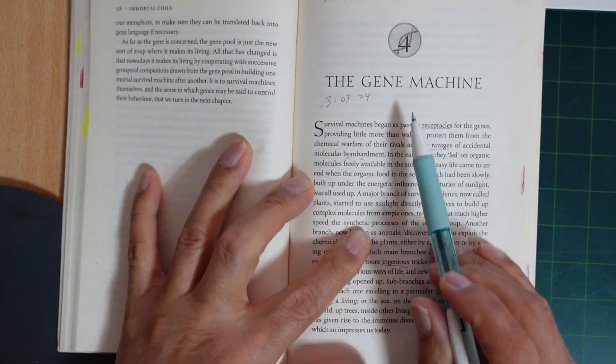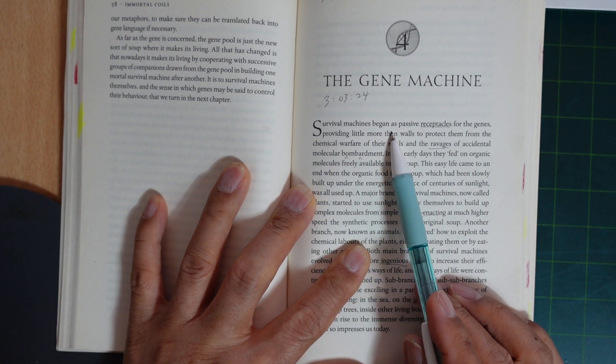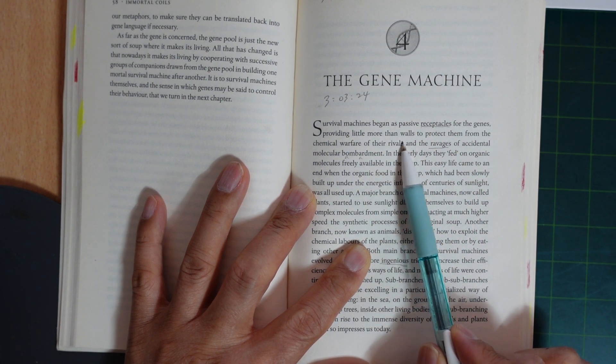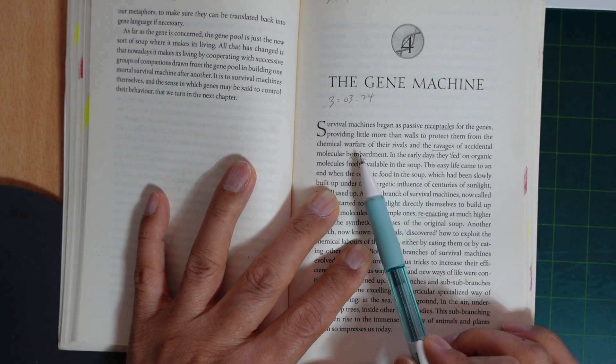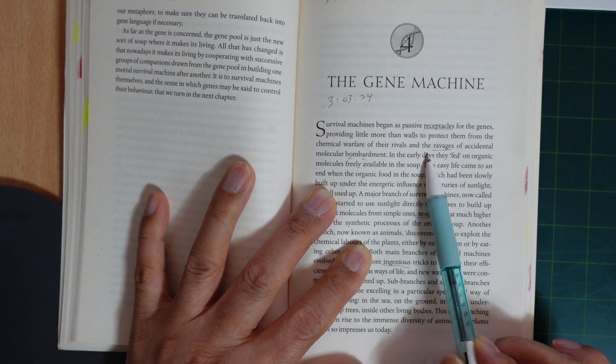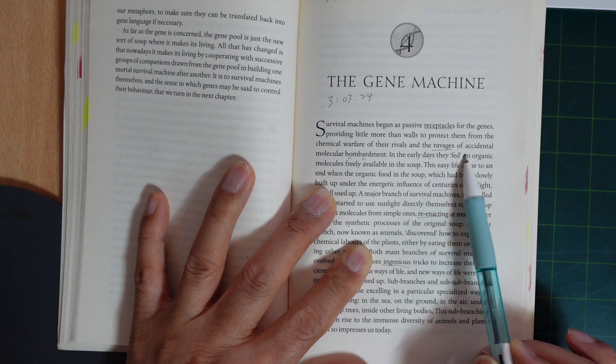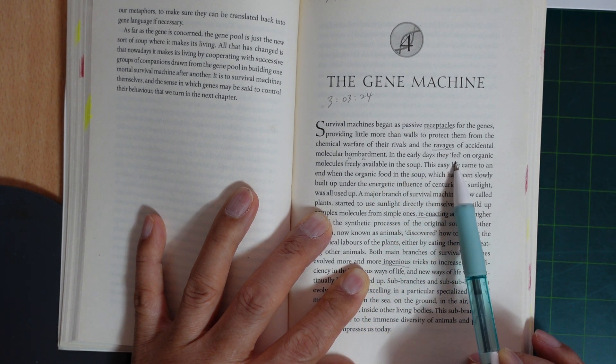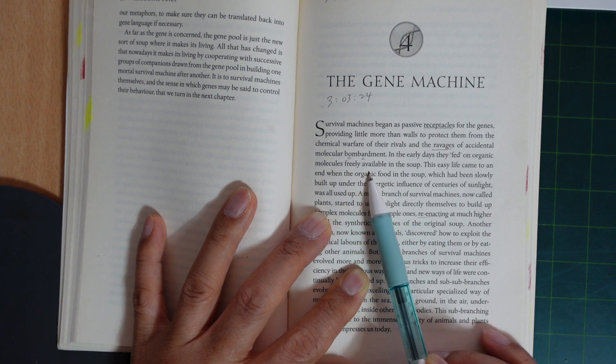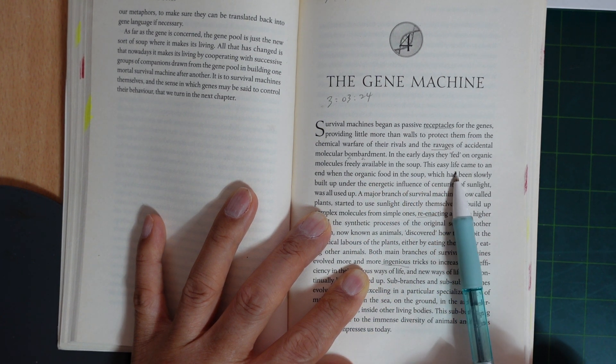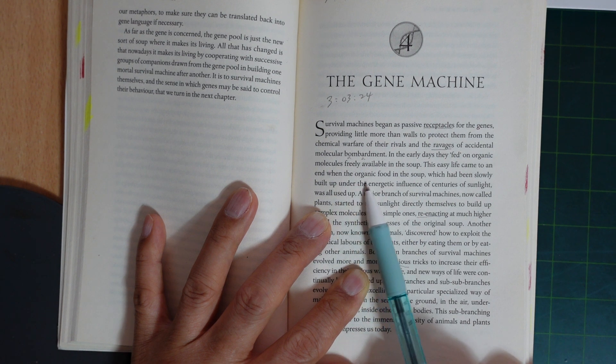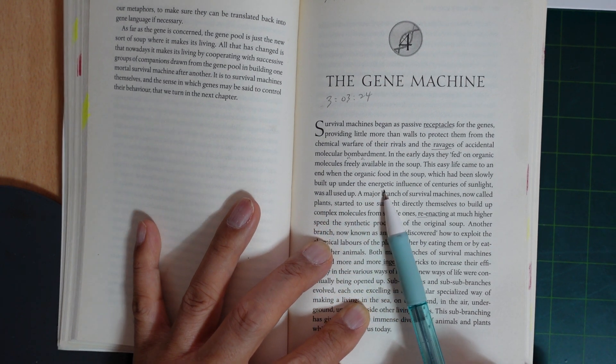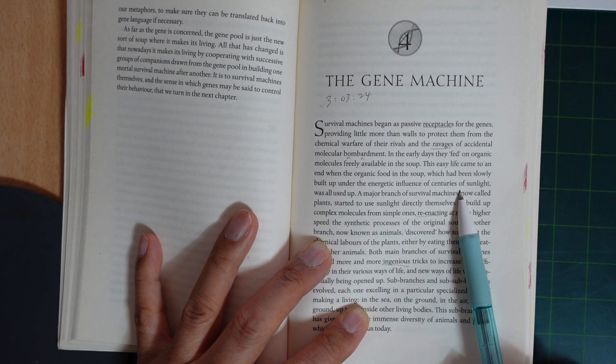The Gene Machines. Survival machines began as passive receptacles for the genes, providing little more than walls to protect them from the chemical warfare of their rivals and ravages of accidental molecular bombardment. In the early days, they could live off organic molecules freely available in the soup. This easy life came to an end when the organic food in the soup, which had been slowly built up under the energetic influence of centuries of sunlight, was all used up.